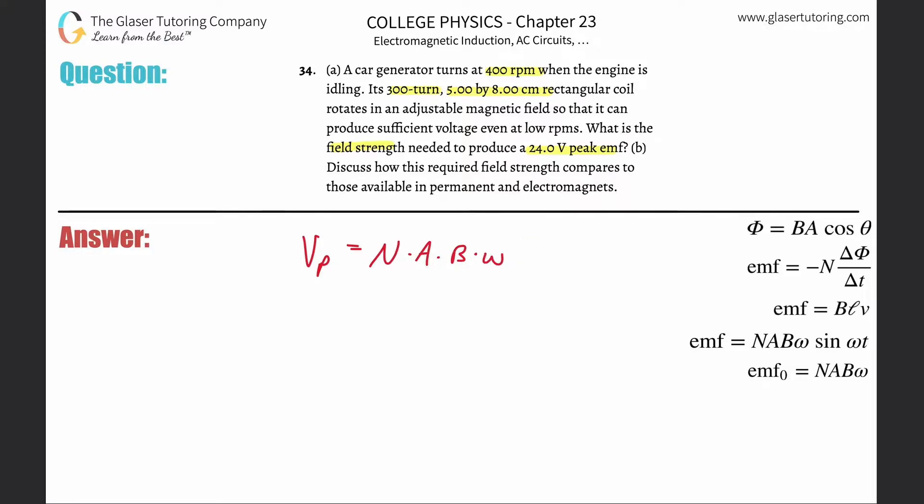Now if I want to find the magnetic field strength, I get to divide by the number of coil turns, the area, and the angular velocity. So therefore the formula is going to look just like this: B equals V_P over N A omega.